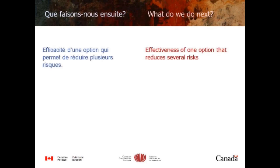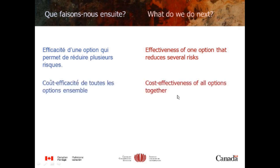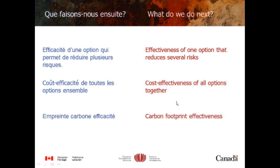What do we do next? We'd like to make the tools work better: handling the effectiveness of one option that reduces several risks, and calculating cost-effectiveness of all options together as a suite. These are just matters of getting the arithmetic right. We'd also like to build in carbon footprint effectiveness — borrowed from carbon footprint calculators — so you can find out how much preservation you can do for the least effect on the planet. That's part of sustainability and CCI's strategic plan, and with a shift in political climate it may become more important. Thank you very much.